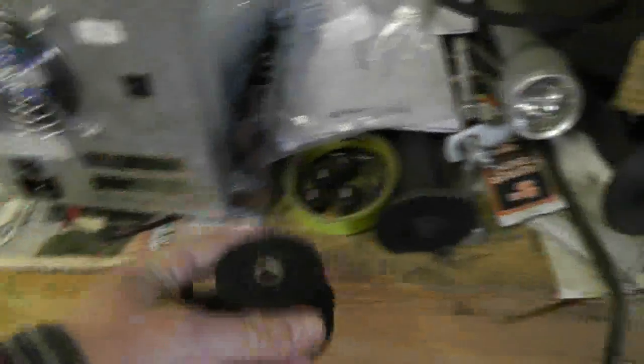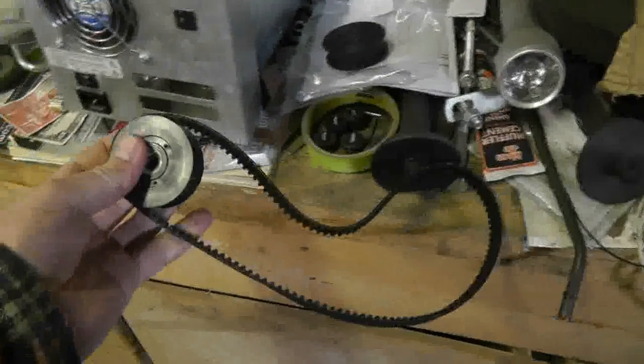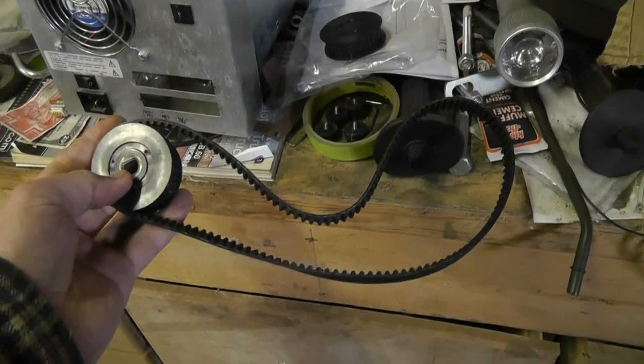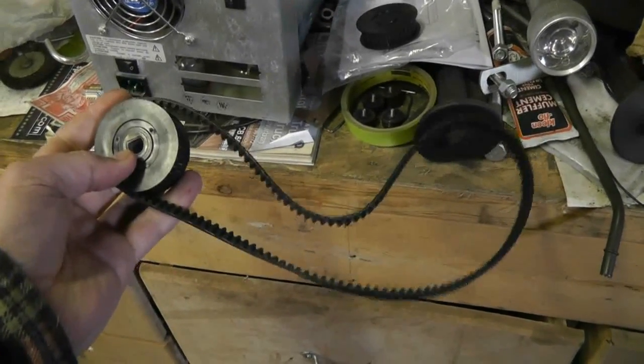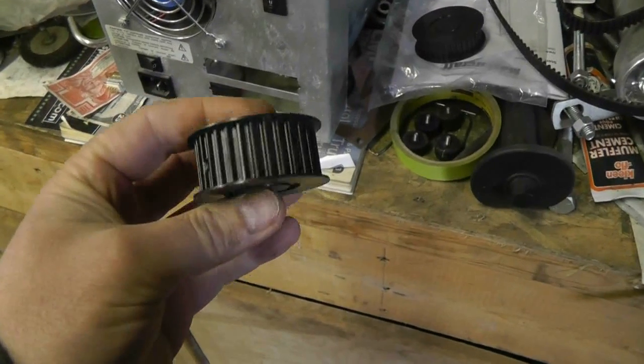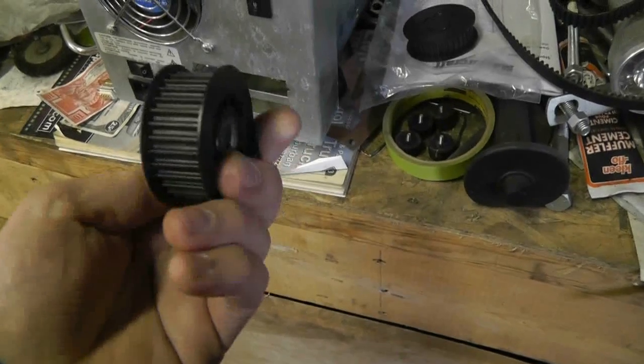The belt span center to center is less than the 11 and a half inches I need. So I really need two smaller pulleys of the same pitch. So I figured, why not make them? Looked like they'd be fairly easy to make.